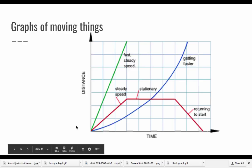So graphs of moving things. Everything that moves should have similar looking graphs, depending on the movement that they are doing. The first one we're going to look at is this green line.